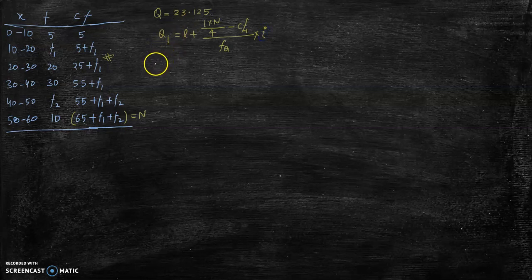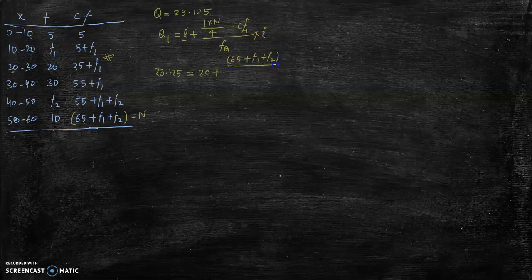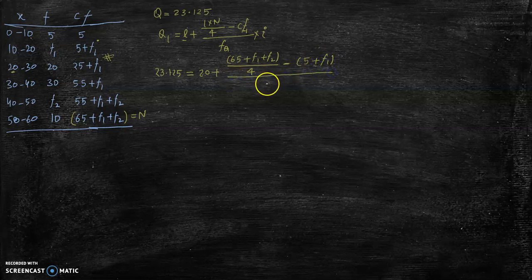The value of Q1 is 23.125, and the lower limit L is 20 since 23.125 falls in the class 20–30. So plugging in: 23.125 = 20 + [(65 + f1 + f2)/4 − (5 + f1)] / 20 × 10. The value of N is 65 + f1 + f2, the cumulative frequency of the previous class is 5 + f1, the frequency of the quartile class is 20, and the class interval is 10.